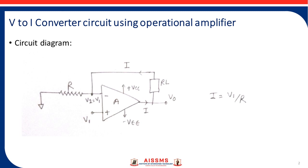In the last lecture, we came across the final current equation: I is equal to V1 divided by R. So, this circuit produces output current I which is given by the input signal voltage V1 divided by the resistor R. From this equation we can say output current I is directly proportional to the input voltage V1, and this is a linear equation. So, this V2I converter circuit is also a linear application of op amp.